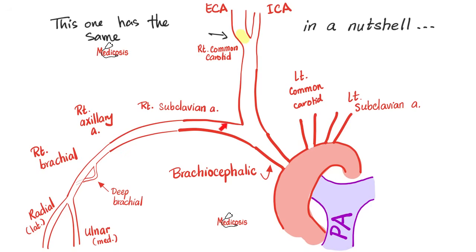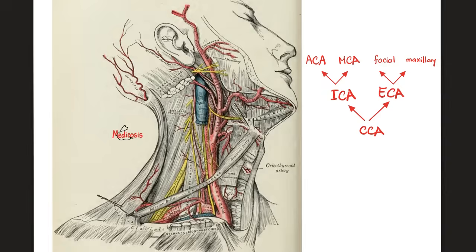The brachiocephalic artery gives right subclavian and right common carotid. The common carotid gives external carotid and internal carotid. The left common carotid also gives internal and external carotids. This is the trapezius; this is the midline of the neck; this is the sternocleidomastoid. Behind the sternocleidomastoid there's the posterior triangle; in front of it, the anterior triangle of the neck. This is the omohyoid muscle — from the scapula to the hyoid bone — with a dirty intermediate tendon that attaches to the clavicle by a double sling.